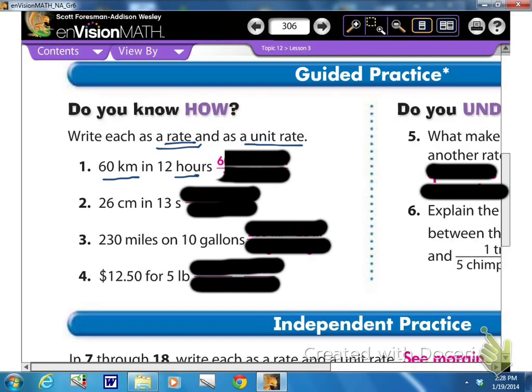So to set it up as a rate, you basically set it up as a fraction. So you should have 60 kilometers over 12. Now to get a unit rate, we want to get it down to 1 unit. So I've got 12 down here. So I'm going to divide by 12. 12 divided by 12 will get me my 1 unit, my 1 hour. And then I'm going to do the same to 60. 60 divided by 12 would be 5. So my unit rate here is 5 kilometers per hour.